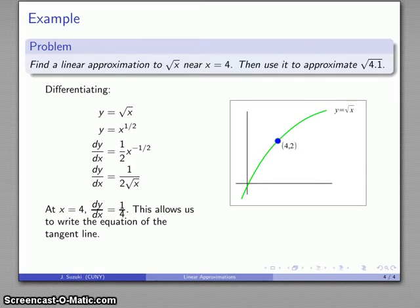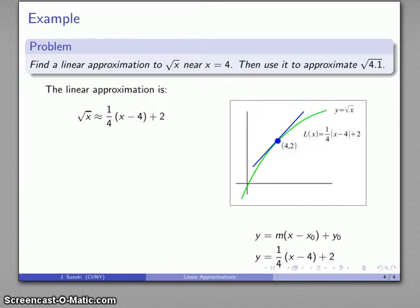So pick your favorite method of writing the equation of a line. Here's one from pre-calculus or from even earlier algebra, this is our point-slope method of writing the equation of the line, and I'll just substitute in the coordinates of my point and the known slope, and that gives me my equation of that tangent line. And again, the reason that this is actually useful is that the function, square root of x, is going to be approximated by the linear equation, the equation of our tangent line, one-quarter quantity x minus 4 plus 2.